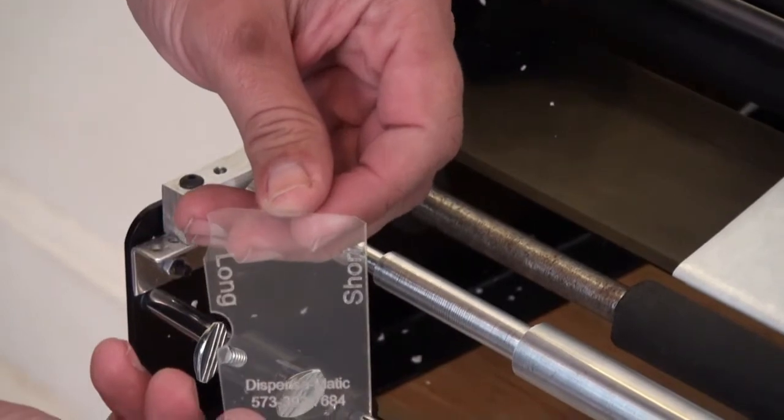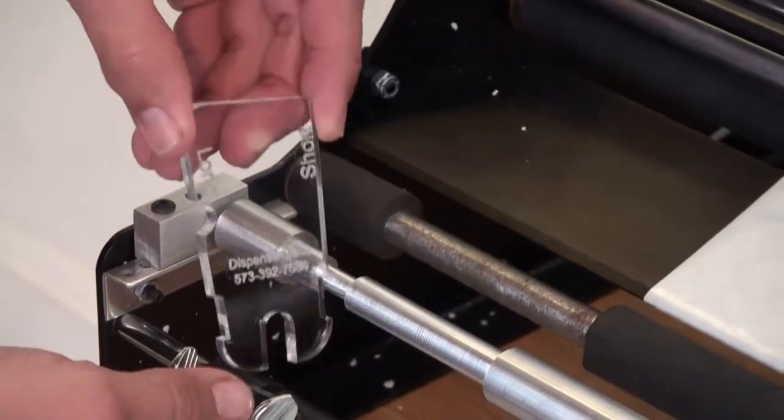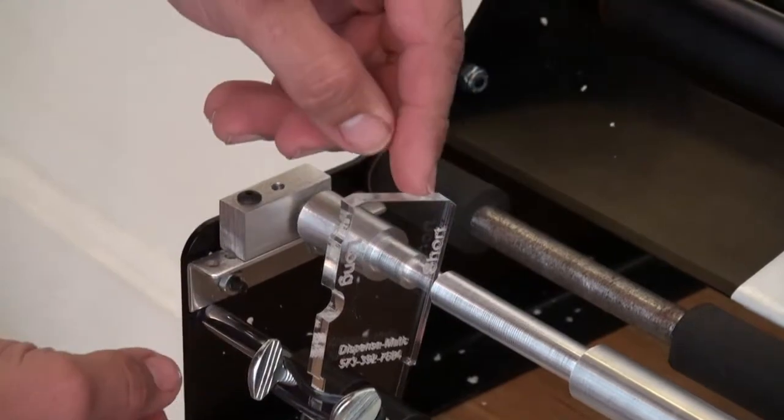So when you want to do the short filter, you have to put the short side against the filter. So I'm going to drop that back in place. Now it's facing the short side.